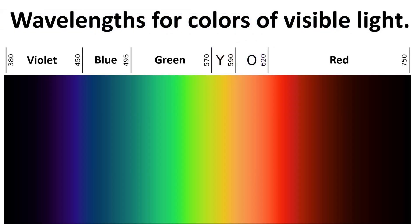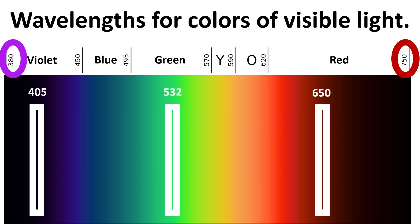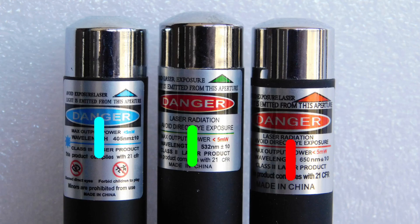When we zoom into the visible light part of the electromagnetic spectrum, we see that the wavelengths range from about 380 nm to 750 nm. That means there are about 400 distinct colors of light that humans can see. The lasers we're using in this video have the wavelengths we've highlighted inside the white rectangles. Their colors are very close to those exact values. Typically, the wavelength values are written on the lasers.